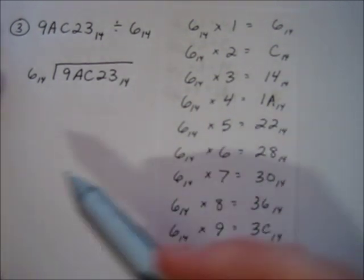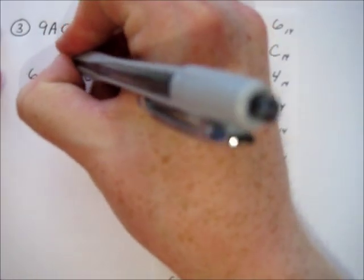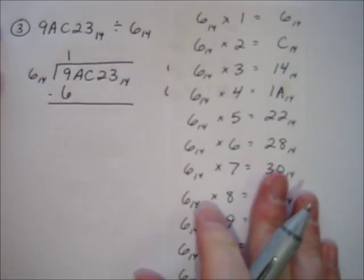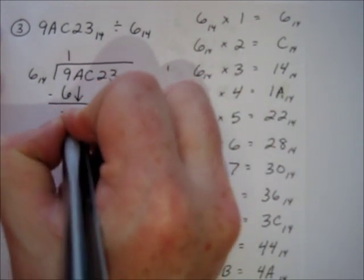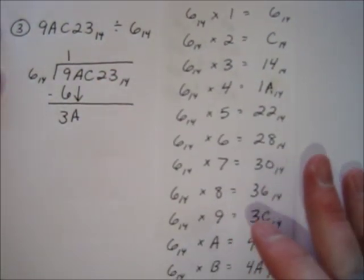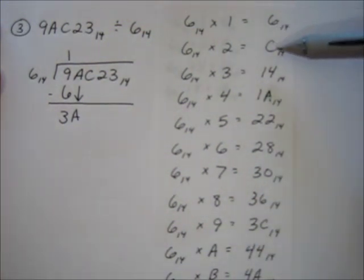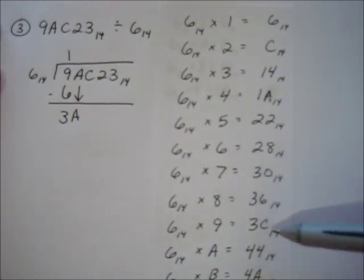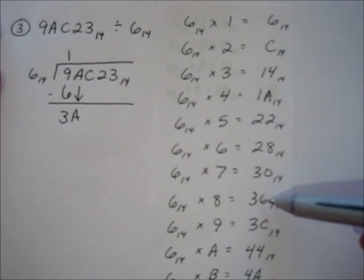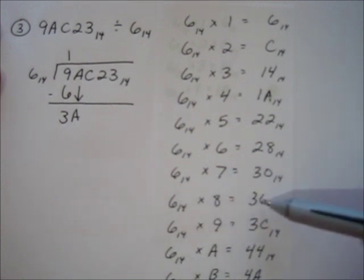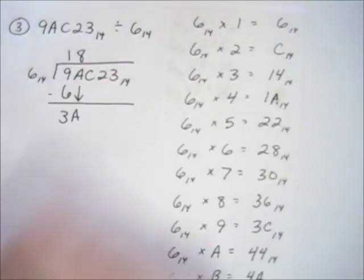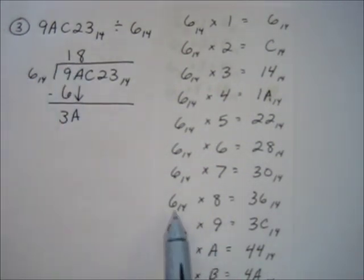So 6 goes into 9 once. 1 times 6 is 6. We subtract and get 3. Bring down our A. So you're trying to figure out how many times does 6 go into 3A. What I want to do is go over to my list here and go down until I get the largest thing that's still smaller than 3A. 30 is smaller, 36 is smaller, but 3C is bigger than 3A. So this is the largest multiple of 6 that is still smaller than 3A, so the answer is 8. 6 goes into 3A eight times. What is 8 times 6? We already did that over here, it's 36.